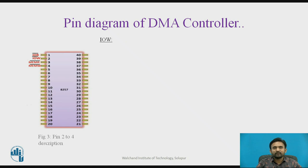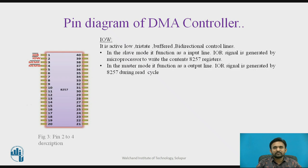About IOW, pin number 2 — it is an active low tri-state buffered bidirectional control line. In the slave mode, it functions as an input line. The IOW signal is generated by the microprocessor to write the contents of 8257 registers. In the master mode, it functions as an output line.